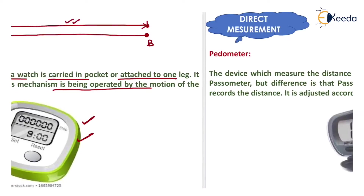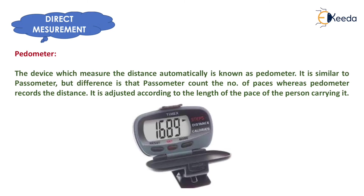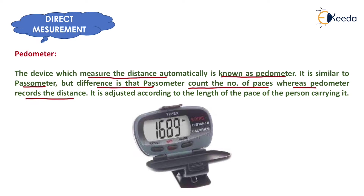Now the next instrument is the pedometer. The device which measures distance automatically is known as a pedometer. It is similar to the passometer, but the difference is that passometer counts the number of paces, whereas pedometer records the distance directly.